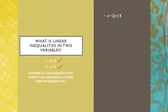A solution of a linear inequality in two variables is an ordered pair (x, y) which makes the inequality true. Let's take for example x plus 2y less than or equal to 8, and use the ordered pair (1, 3), where 1 is our x and 3 is our y.